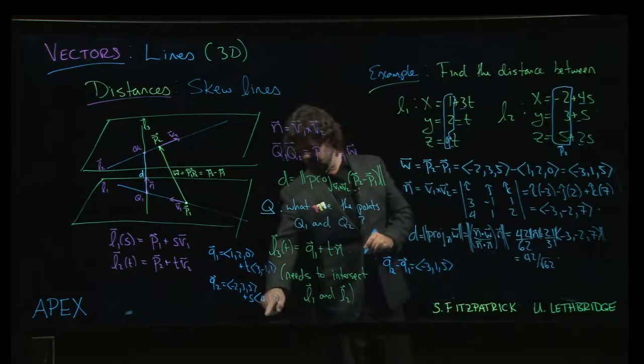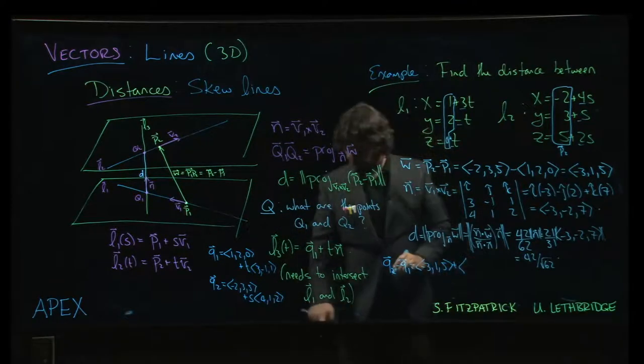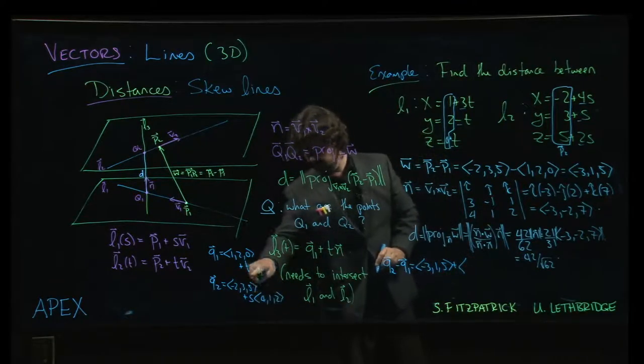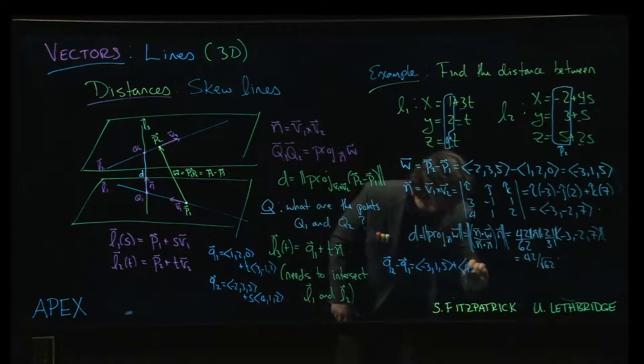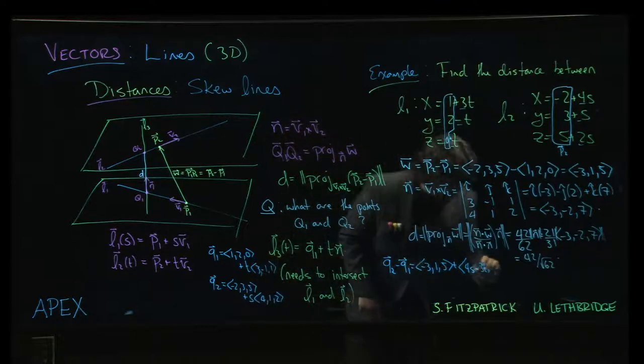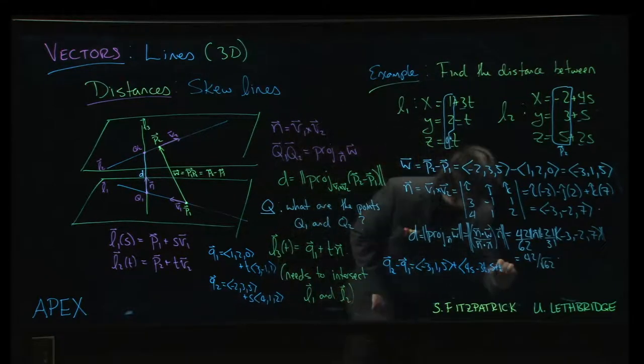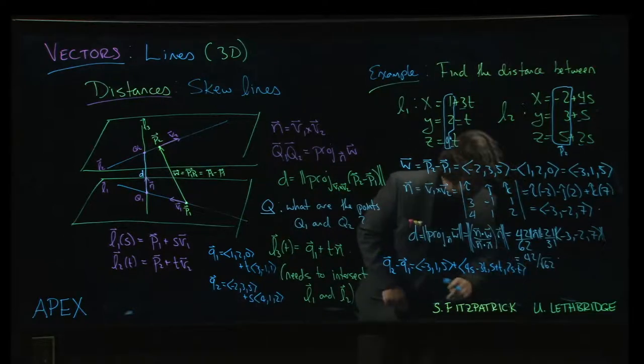and then I'm going to get 4s minus 3t, and then I'm going to get s plus t, and finally I'm going to get 2s minus t.